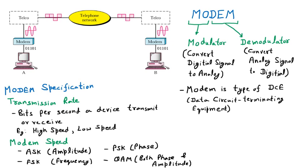The next specification is bandwidth. Bandwidth is the sum of limits — the upper and lower limit of frequency that a line can carry. That is the standard definition of bandwidth.